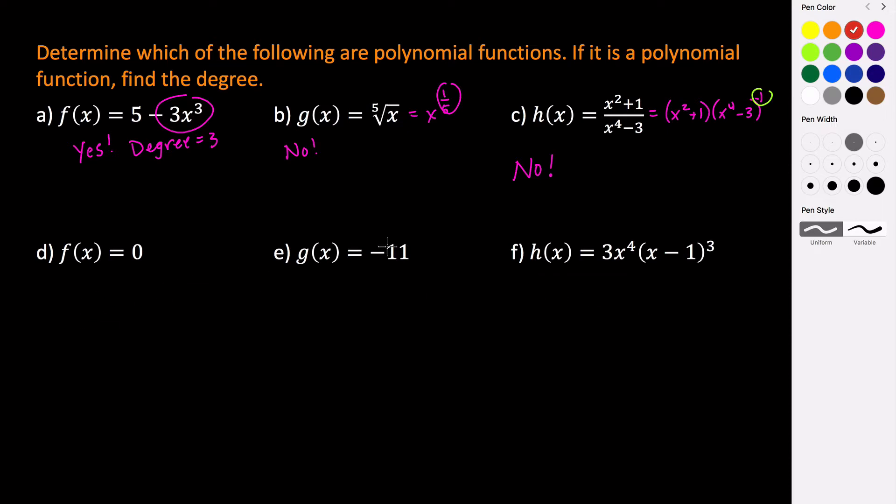These last three are a little bit different. So this one is a polynomial function, and this is actually a special polynomial function. This is called the zero function.